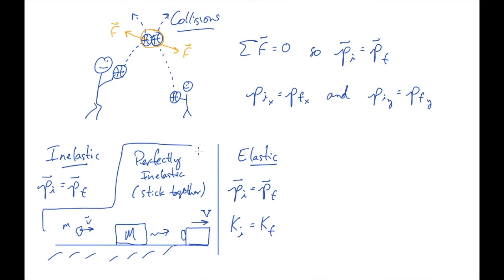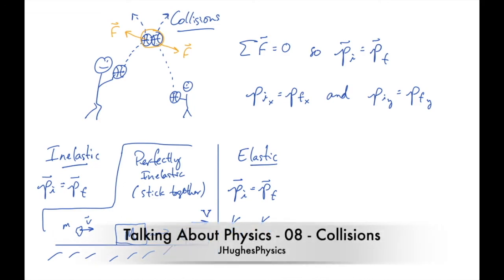The last thing to remind you of is that when you see the word collision, the collision force dominates the motion, and because of Newton's third law, you can be sure that for a colliding system all of those forces will add to zero so that momentum is conserved. The inelastic collision problems we're about to look at are exercises in momentum conservation. We'll look at those problems next, and then come back and talk about the more complicated elastic collisions.